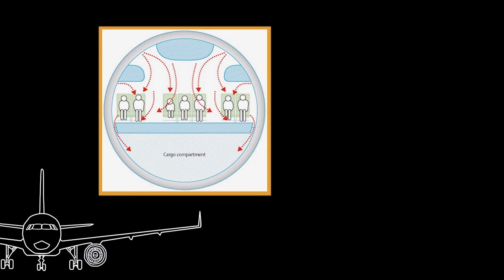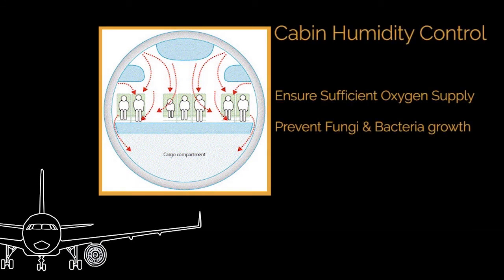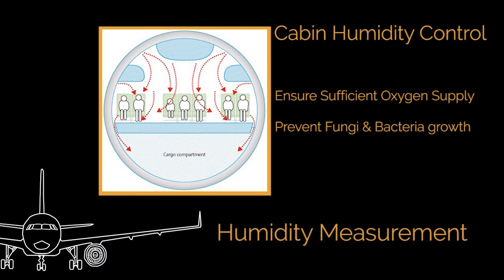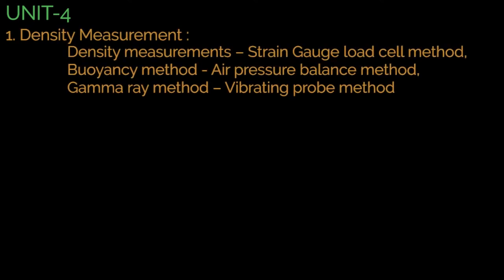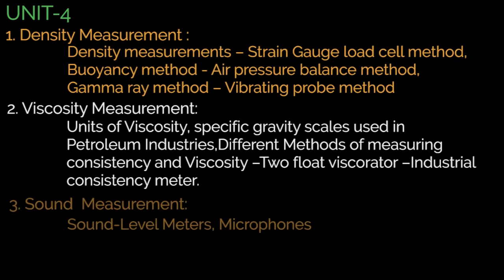Next is humidity measurement. Air density decreases with increasing humidity. Thus, aerodynamics of the flight are affected when humid air replaces the dry air around the aircraft. All airplanes use humidity measuring devices for cabin humidity control. This ensures the proper oxygen supply to the passengers and also prevents fungi and bacteria growth inside the cabin. So in Unit 4, we will learn about different measurement techniques for density, viscosity, sound, and humidity.